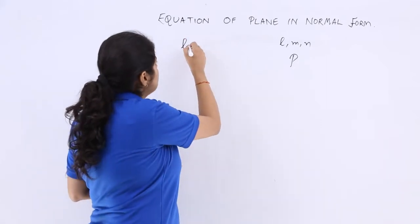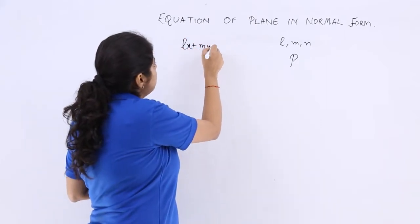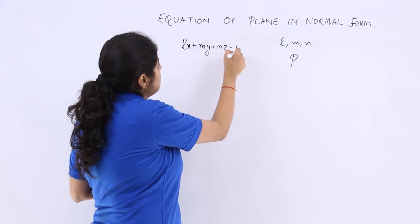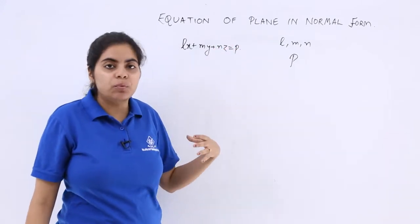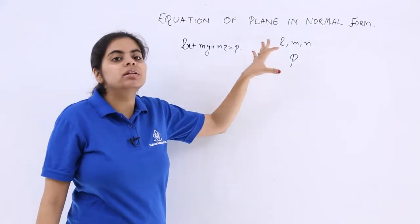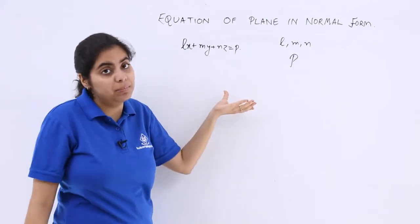So you have to remember it, it would be Lx plus My plus Nz is equal to P. So this is important and it is important from the point of view that even if you have been given direction cosines, you can frame an equation.